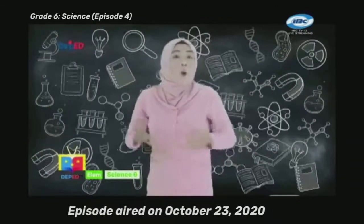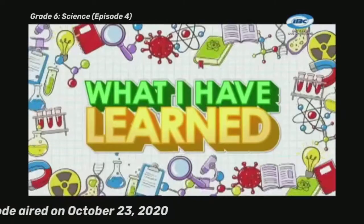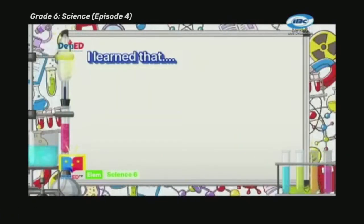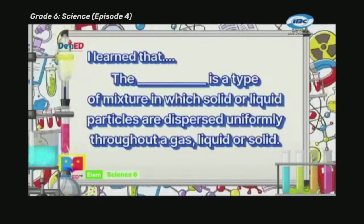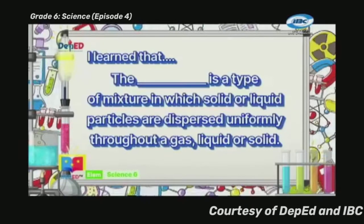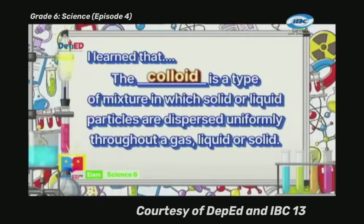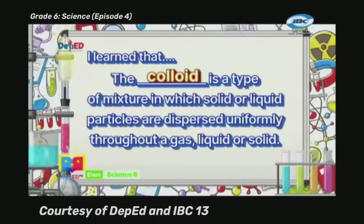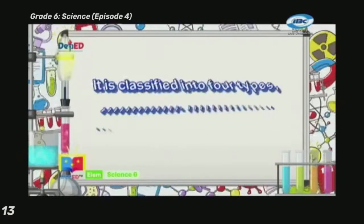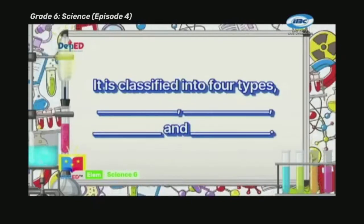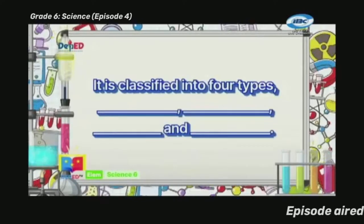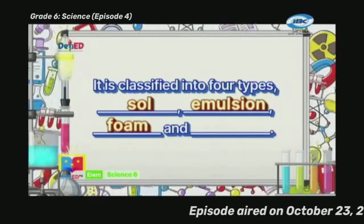Now, let's go to What I Have Learned. Complete the statement — write your answers on your paper. I learned that the blank is a type of mixture in which solid or liquid particles are dispersed uniformly throughout a gas, liquid, or solid. The correct answer is: colloid is a type of mixture in which solid or liquid particles are dispersed uniformly throughout a gas, liquid, or solid. It is classified into four types: sol, emulsion, foam, and aerosol.